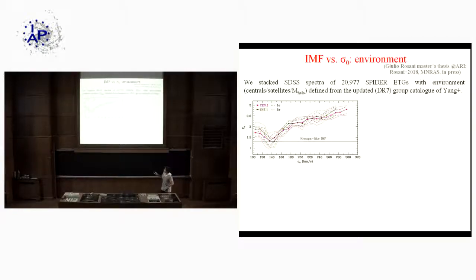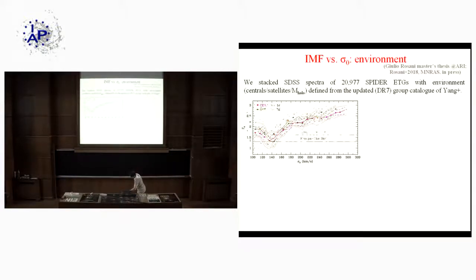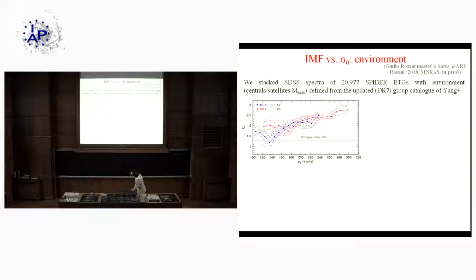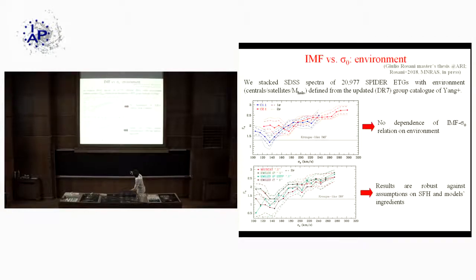More recent work in terms of the environment where galaxies reside: we stacked spectra according to the environment, splitting galaxies into centrals and satellites. The IMF-sigma relation from Sloan shows not much variation between the two samples. The same holds for satellites in low and high mass groups, and for centrals split according to parent halo mass — not much variation with environment. We also tested a number of modeling ingredients, finding pretty much the same result. This is from Rosani et al. this year.